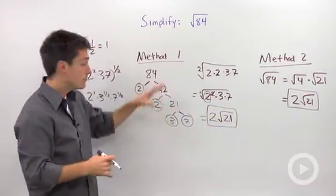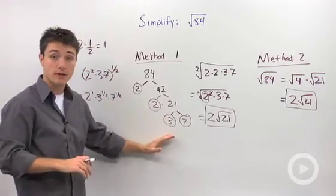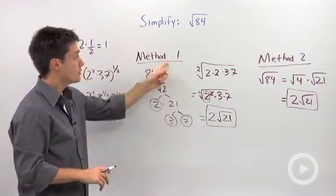So notice that method two uses a little bit less room, it's probably a little more time efficient, but if you are not confident in your factoring, you can do the prime factors and use method one.